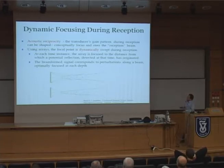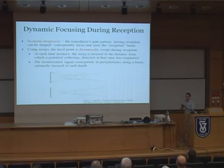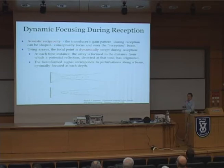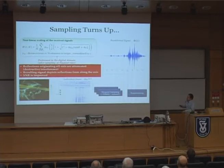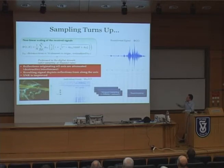Using arrays, we have the ability to change the focal point over time. We can exploit the straightforward relationship between detection time and perturbation distance to sweep the focal point through time, obtaining a beam optimally focused at each depth. This is more or less where sampling comes in, because this whole dynamic focusing calculation is done in the digital domain by modern devices. Here we have the equation for this dynamic focusing, or beamforming.